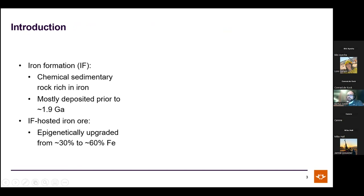Iron formations are chemical sedimentary rocks, typically formed in a marine setting, with iron content usually above 15-20%. Sometimes they're banded, sometimes not — they can be massive, granular, or reworked chemical sediment, coming in quite a variety of mineralogies and textures. They were mostly deposited prior to 1.9 billion years ago.